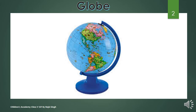Globe or map per kisi bhi place ko hum imaginary lines ke help se dekhte hain, jo lines east to west aur north to south run karti hain. In imaginary lines ko hum longitude aur latitude kehte hain. The point on the north where the latitudes join is called the north pole, and the point on the south where they join is called the south pole.